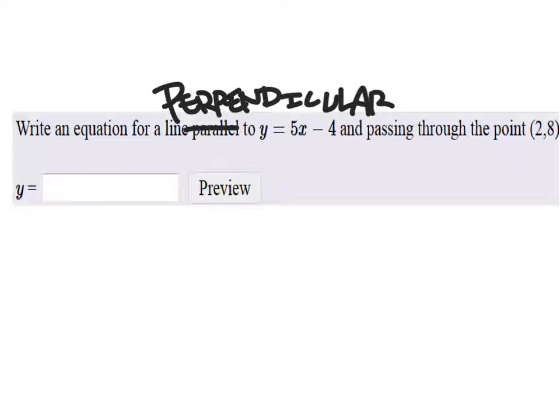That's very good, yeah. So for perpendicular lines, we do need the opposite reciprocal of the slope.